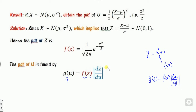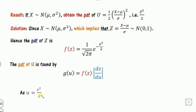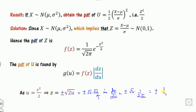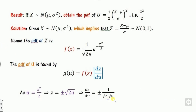Since U = Z squared over 2, you can find Z = sqrt(2U). Therefore, dZ/dU equals 1 over sqrt(2U). Combining terms, this simplifies accordingly. Since it involves an absolute value, the plus-minus sign is discarded. Now substitute the value of Z: Z equals plus-minus sqrt(2U).